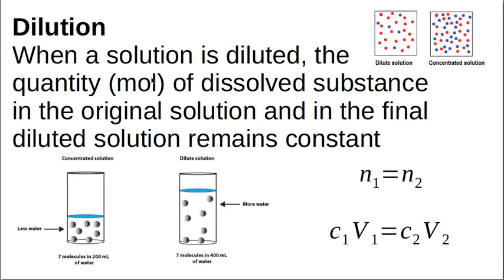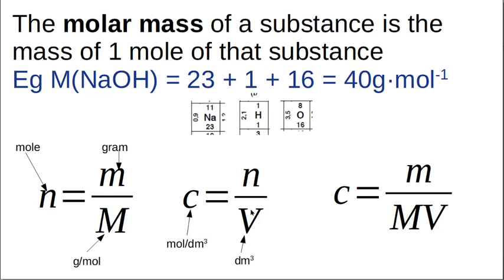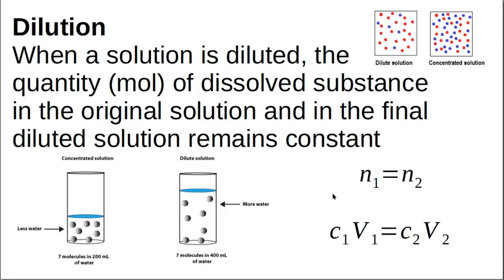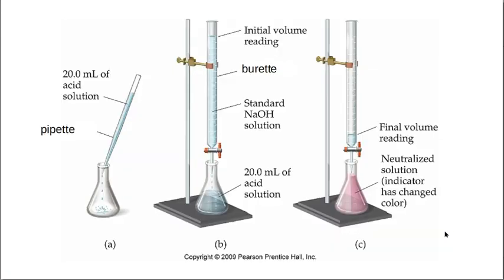For dilution, remember: if you have seven molecules of solute in 200 mL and you add more water to make 400 mL, you still have those same seven molecules. The number of moles stays the same. Since n = cv, if n₁ = n₂ then C₁V₁ = C₂V₂. Concentration times volume of the undiluted solution equals concentration times volume of the diluted solution.